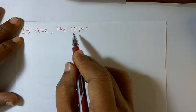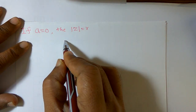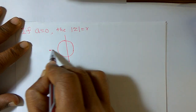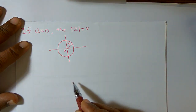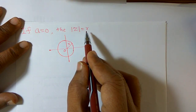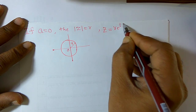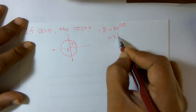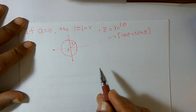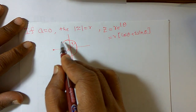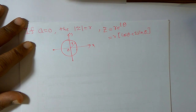Suppose a is equal to 0. Then I obtain mod of z is equal to r. Geometrically, it also represents a circle with radius r and center 0. The polar form of this equation is z equals r times e to the power i-theta, or r times (cos theta plus i sin theta). Geometrically, it represents a circle with radius r.